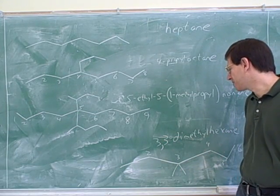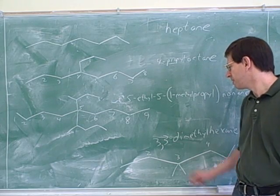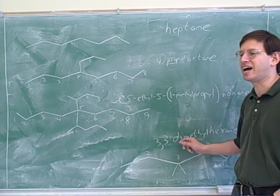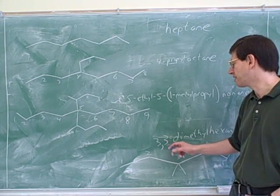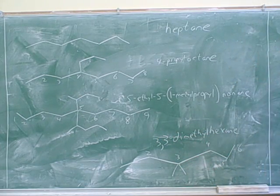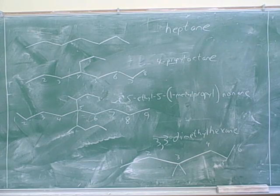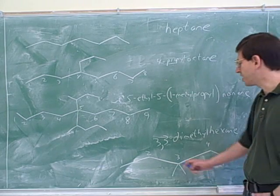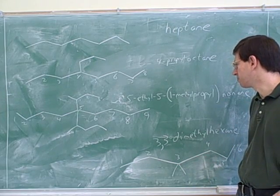What happens is that people congratulate themselves too soon. Half of them are happy they remembered the two threes and forget to put in the 'di.' The other half remember the 'di' and forget they need two threes. We actually need both pieces to indicate the two substituents. It's always easier to get all of these right if you physically write down the numbers on the parent chain.